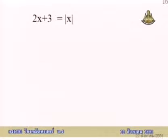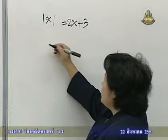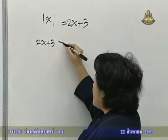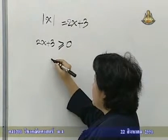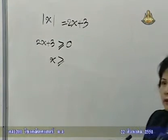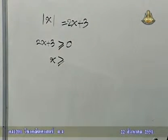Let's take a look at the slide. We have the absolute value of x equals 2x plus 3, more or equal to 0, x more or equal to negative three-halves.